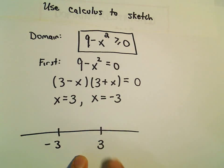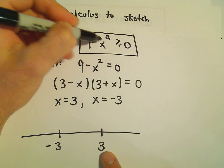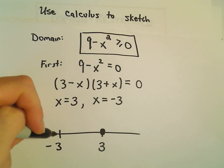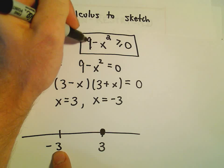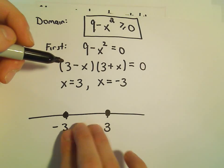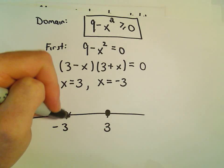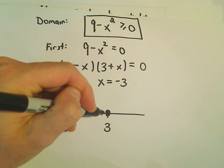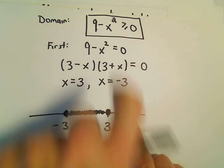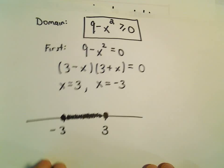Now I test these values against the actual inequality. Plugging in positive 3: 9 minus 3 squared gives 9 minus 9, which is 0, and 0 is greater than or equal to 0, so that point is in the domain. Plugging in negative 3 gives the same result — 0 is in the domain. Taking x equals 0 in between gives 9 minus 0, which is also greater than or equal to 0, so all points between negative 3 and 3 are in the domain. But if we take anything larger than 3, say 10, we get 9 minus 100, which is not greater than or equal to 0. Likewise, nothing smaller than negative 3 works.